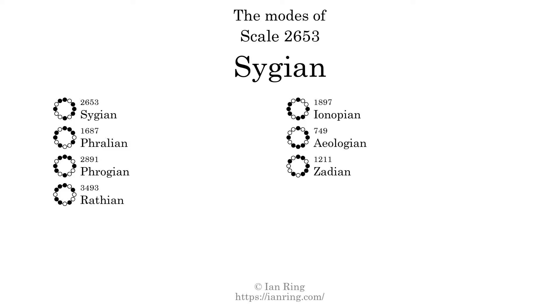The seventh and last mode is scale 1211, also known as Zadian. It sounds like this.